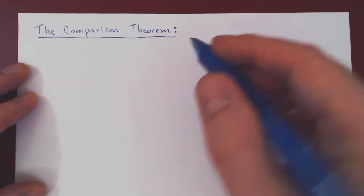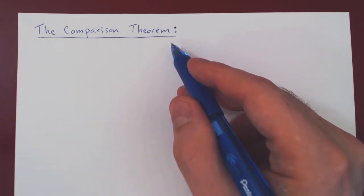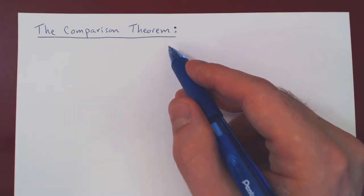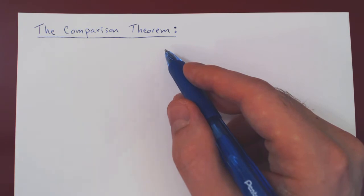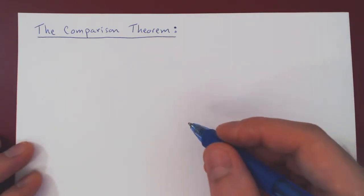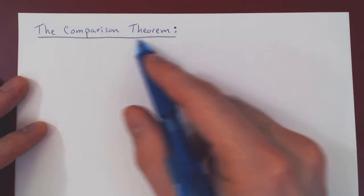In this video, we will discuss the comparison theorem in the case of improper integrals of non-negative functions. Sometimes when you deal with an improper integral, you don't care so much about what the value may be, but you only want to figure out whether the improper integral converges or diverges. Some of these integrals can be rather complicated, so it is necessary to determine convergence or divergence by comparing them with much simpler integrals. That is the idea behind the comparison theorem.